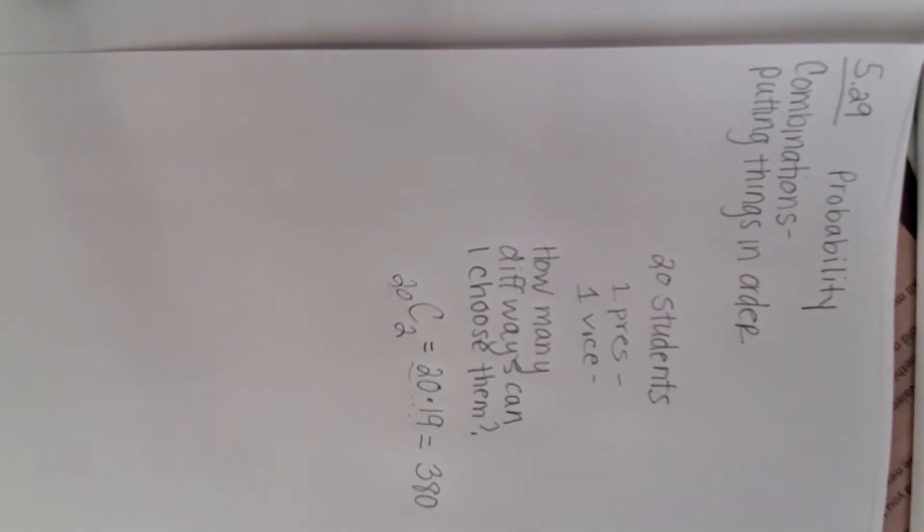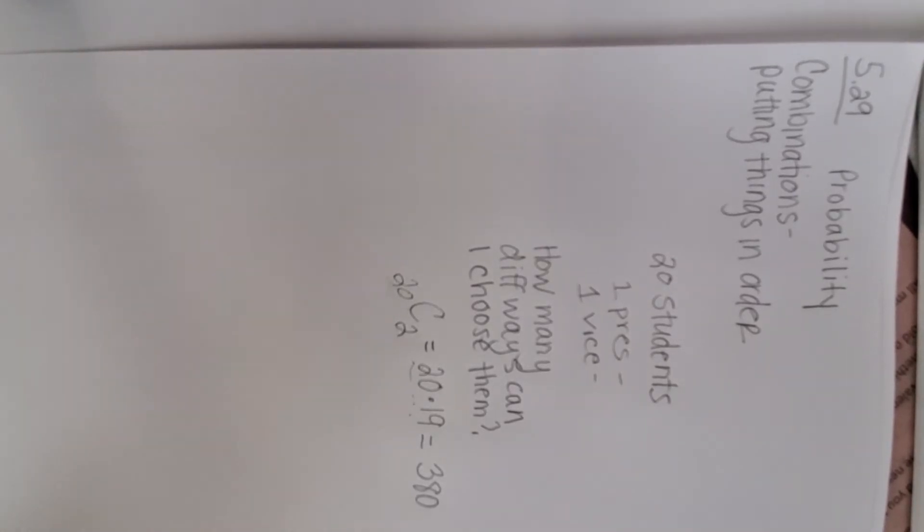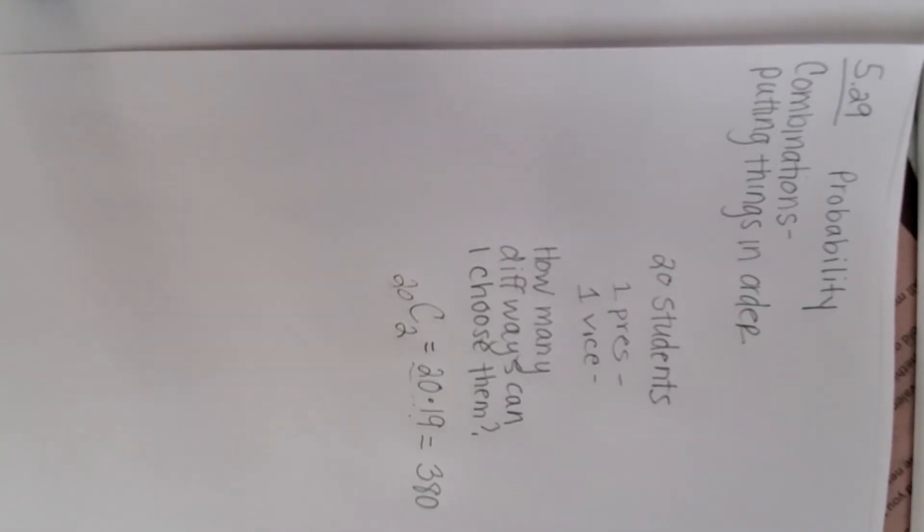That means that from 20 students, there are 380 different combinations that I have to choose from. It sounds like a lot, but if you really stopped and worked out how many kids there are, how many choices you have for each, you'd find out that there are indeed 380.